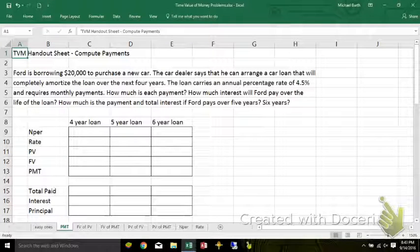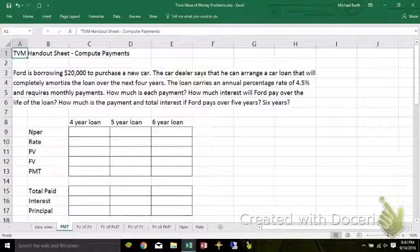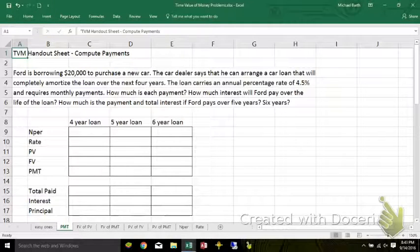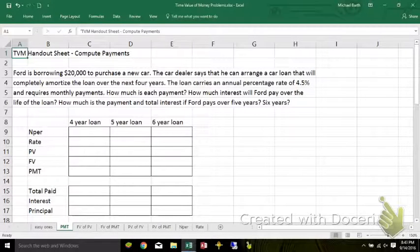All right, each of the problems on this worksheet compute the payment, which is an annuity payment of equal amounts for each period, each of the NPERs, over time.